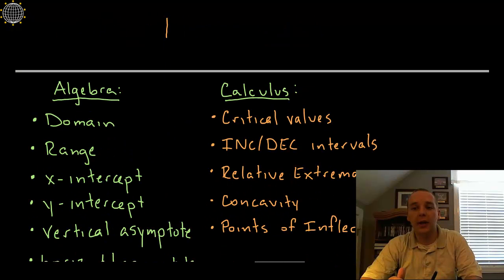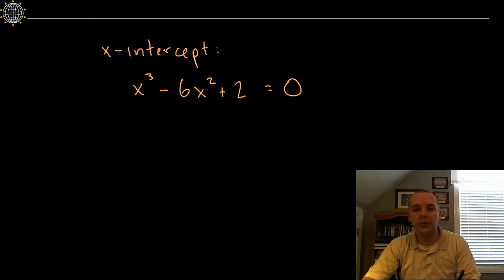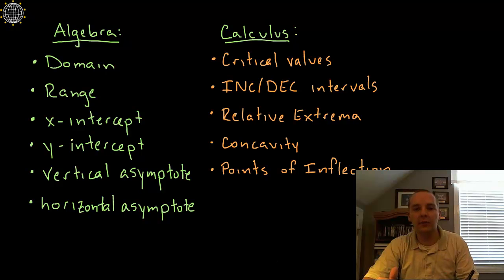So if we remember what we can actually find by hand, there is a list of some algebra things and some calculus things. We're going to try to find as many of these as we can: the domain, the range, the intercepts and the asymptotes, those are algebra type things. And then we're going to also try to find some calculus things like critical values, increasing and decreasing intervals, extrema, concavity and points of inflection.